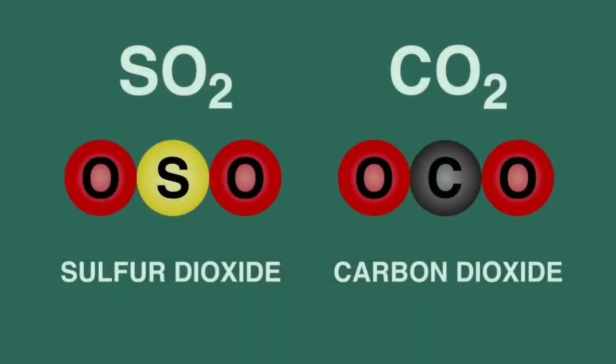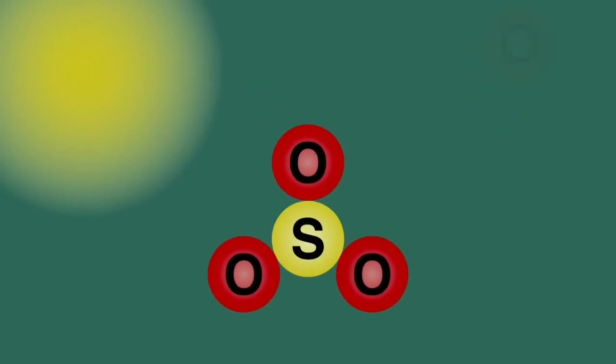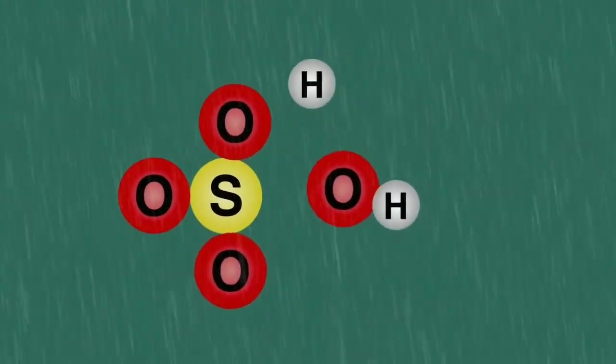In the presence of sunlight, a photochemical reaction will take place, where sulfur dioxide reacts with more oxygen to form sulfur trioxide. This dissolves in the rainwater, forming sulfuric acid.